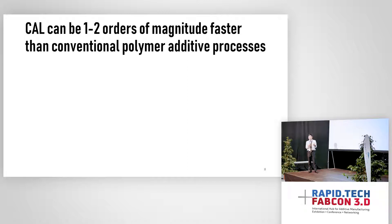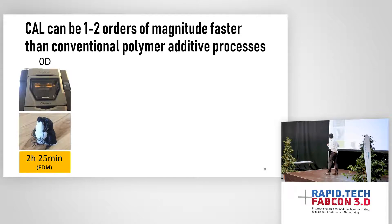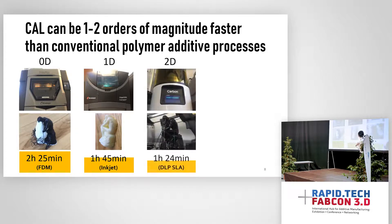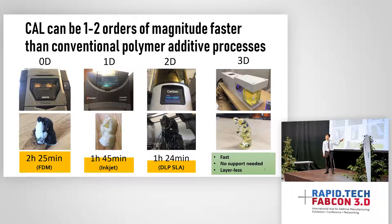How does it compare to other technologies? For a 0D process, printing a Finca may take two hours. For 1D, slightly shorter; for 2D, even shorter. But once you get to volumetric 3D, you can get down to one minute of print time. This is game-changing. You don't have to add any support materials, and the technology itself is inherently layerless.